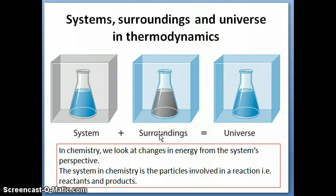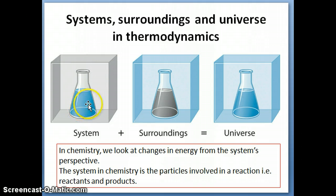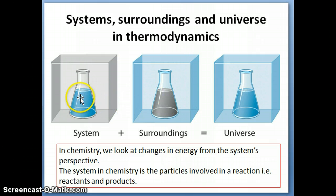The surroundings, on the other hand, are basically everything else that interacts with the system in a direct way — in general, everything else in the universe that's not the system. You can see in this picture the system is colored gray, and everything else is blue — that's the surrounding. When you add the system and the surroundings together, you get the universe, as far as energy is concerned. The energy of the universe has to be constant — that's the first law of thermodynamics — but the energy of the system and the surroundings doesn't have to be constant, because they can exchange energy. The system can gain or lose energy, and the surrounding can gain or lose energy as a result of its interaction with the system.